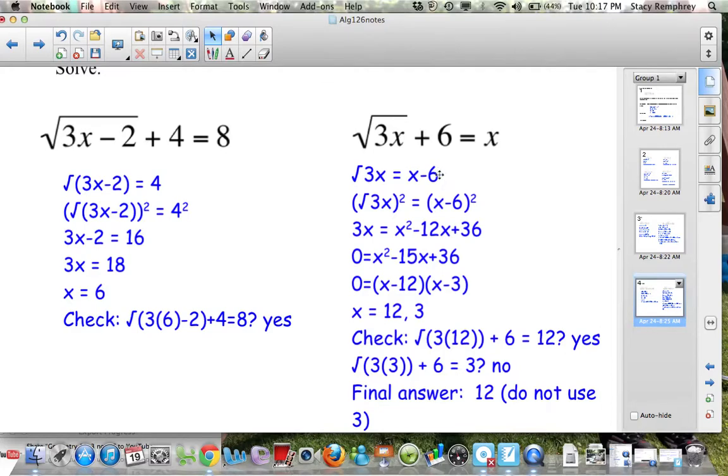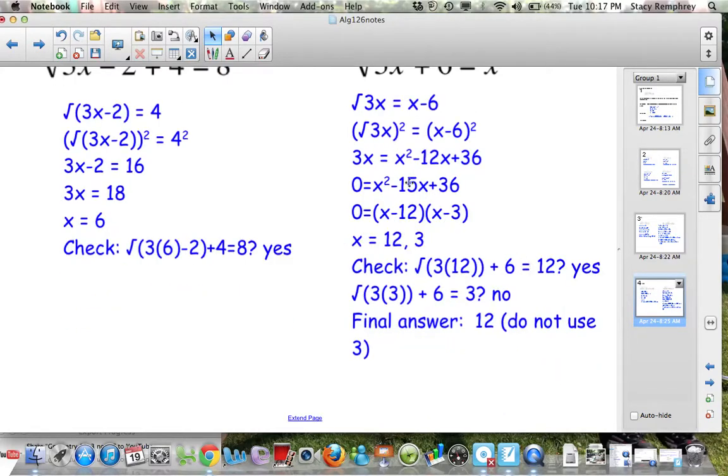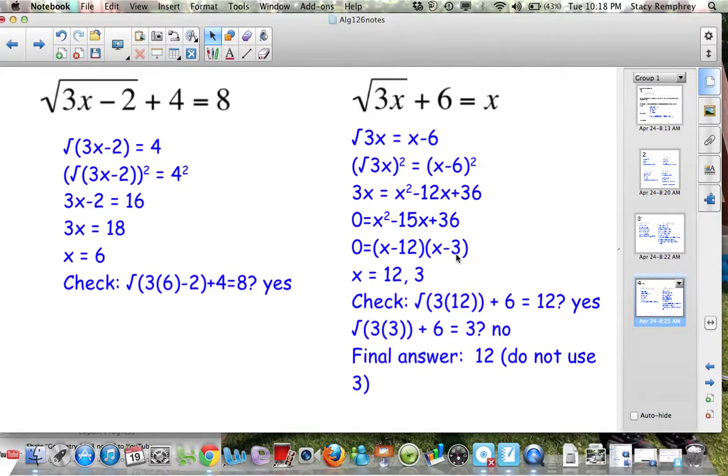In this problem, step 1, I subtracted 6 from both sides to get the square root by itself. Then I squared both sides. I got to here, because square root of 3x quantity squared is 3x. This is a quadratic, I got to make it equal 0, so I subtracted 3x from both sides. When I get to here, you can definitely solve it by quadratic formula. I chose to solve it by factoring because the factors of 36 weren't too bad. When I solved this by factoring, I got 12 and 3, and then I went to check. I plugged 12 in for x, and then I plugged 3 in for x. Only 12 works. The 3 does not make the two sides equal. So your final answer is 12. Don't say 12 and 3. It's only 12.